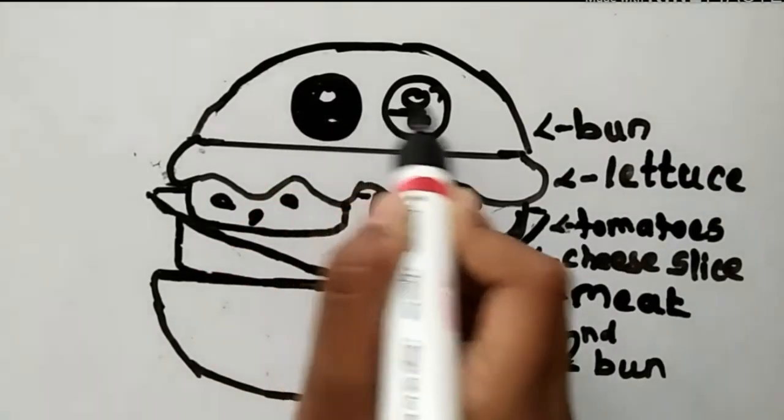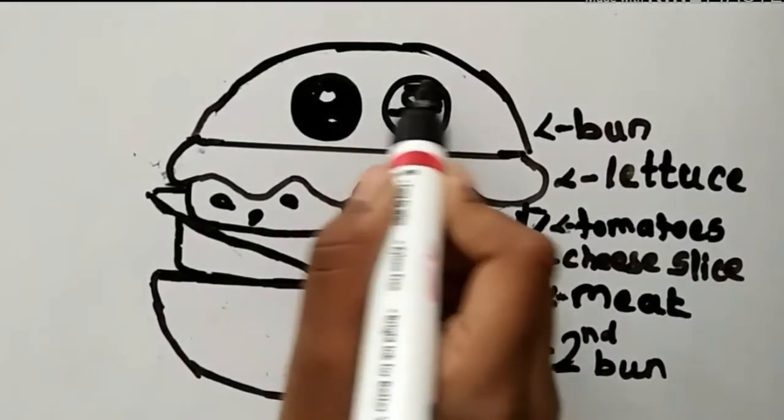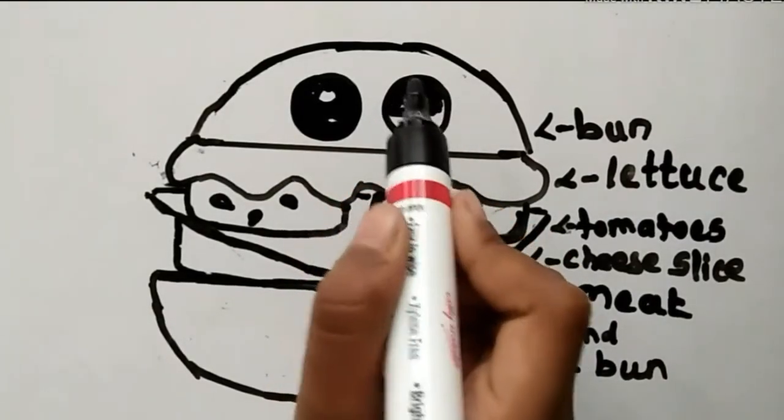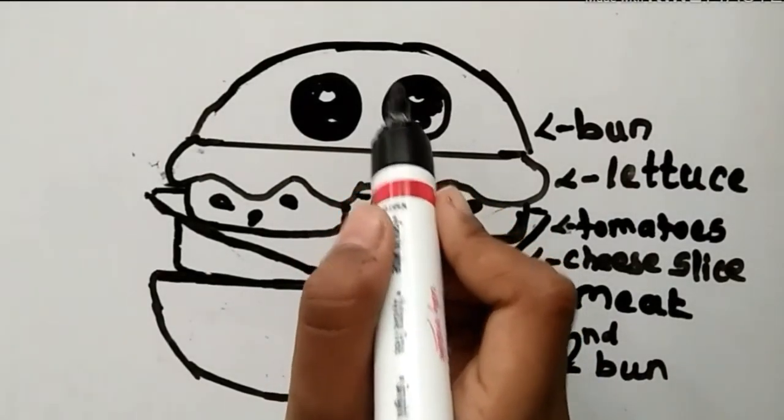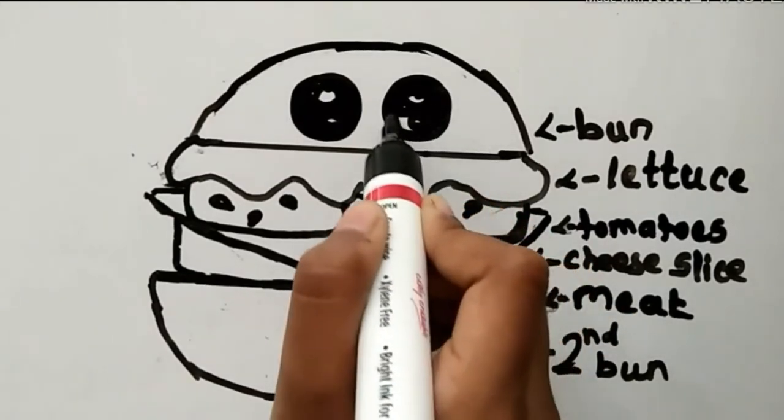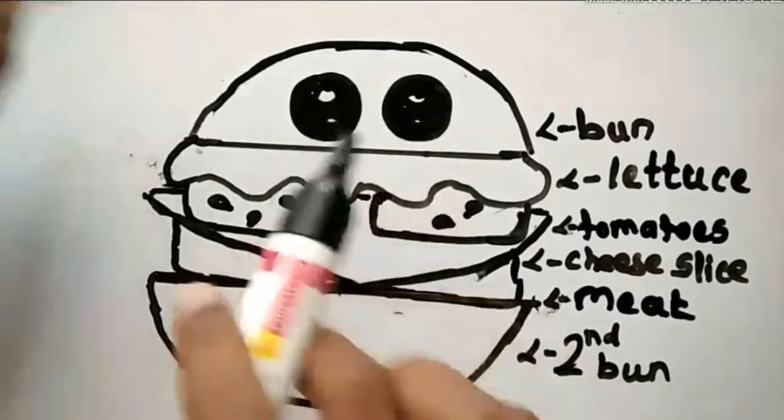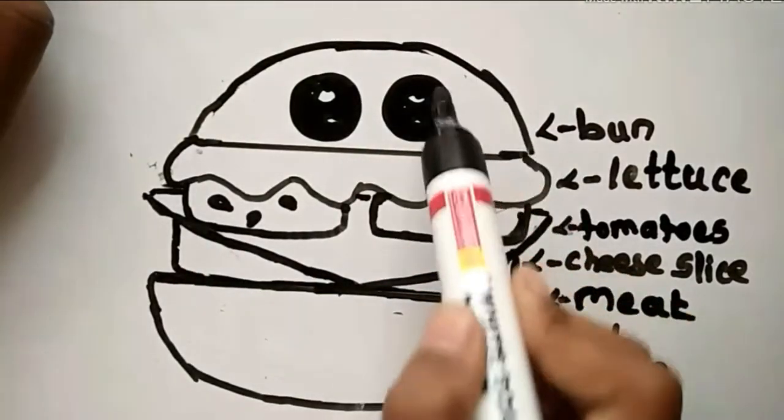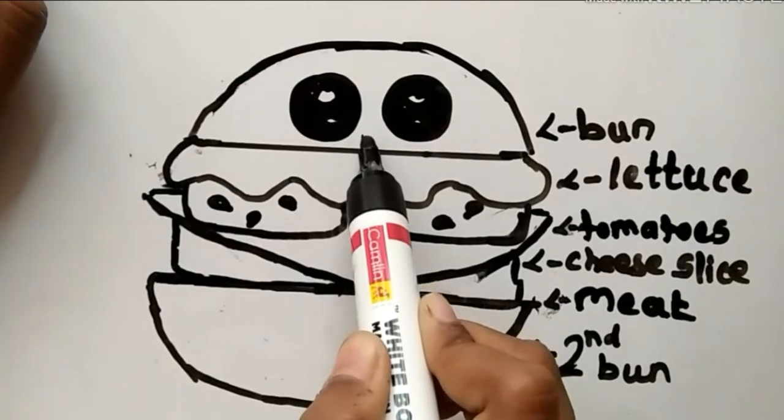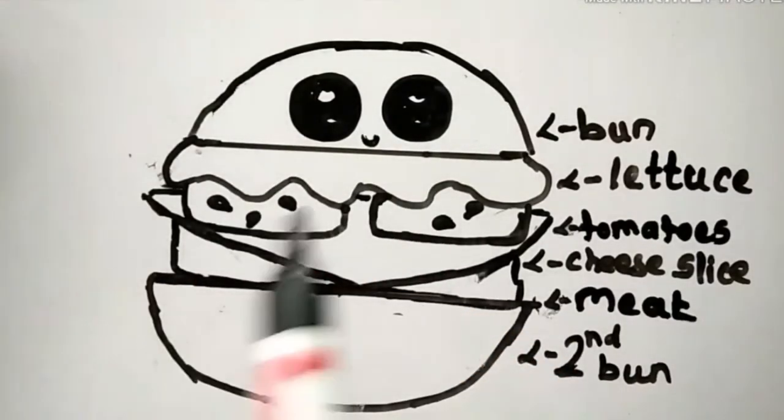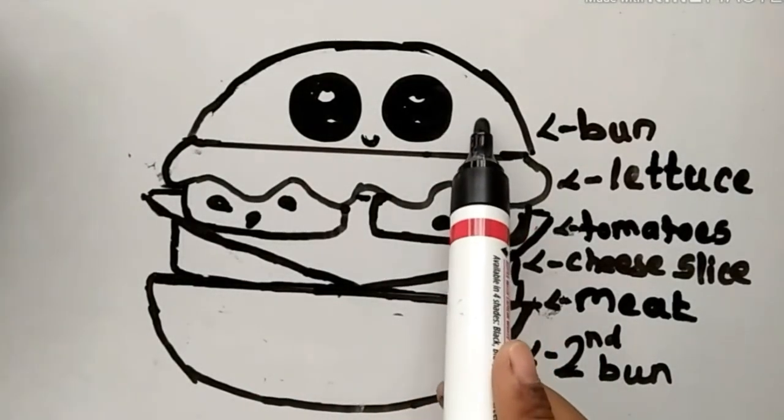So now I am going to draw these two little cute eyes. And now, this is for the shine in the eyes of the burger. Now these are our eyes. Wow, it looks good.